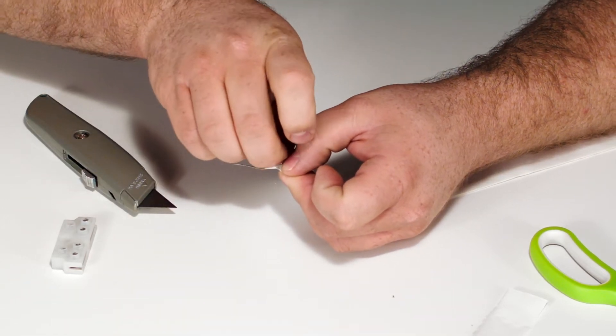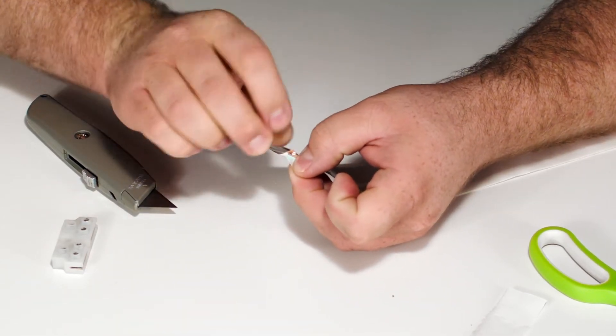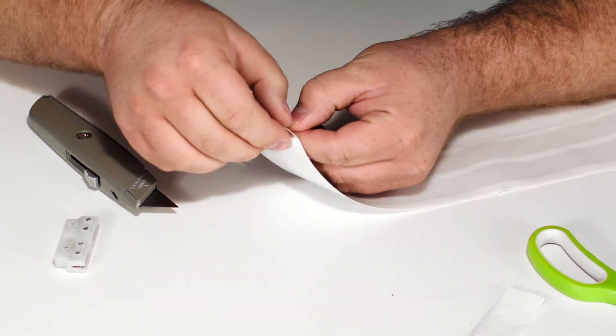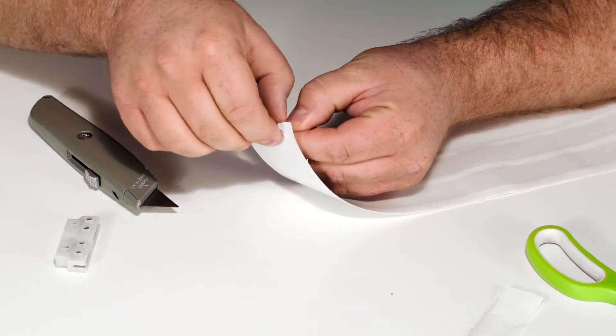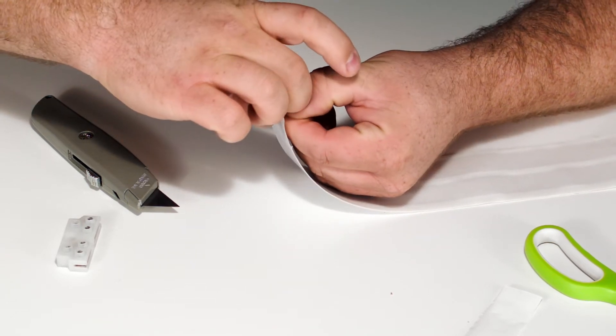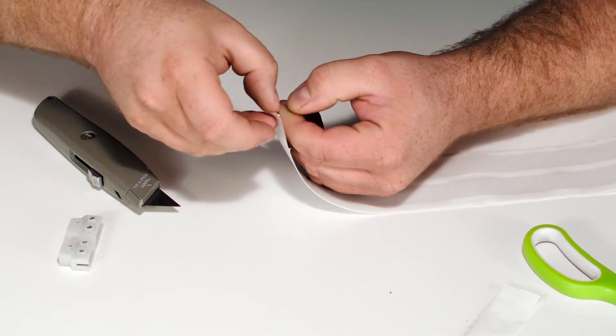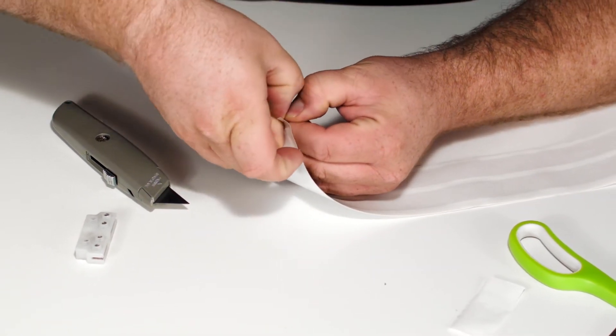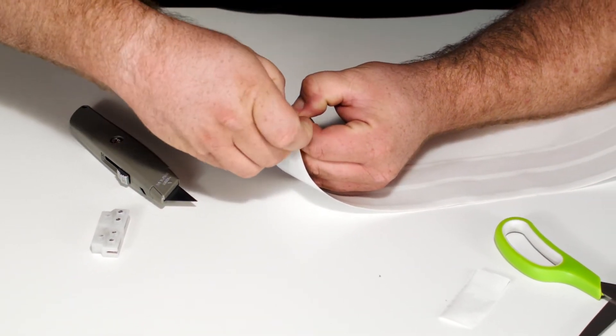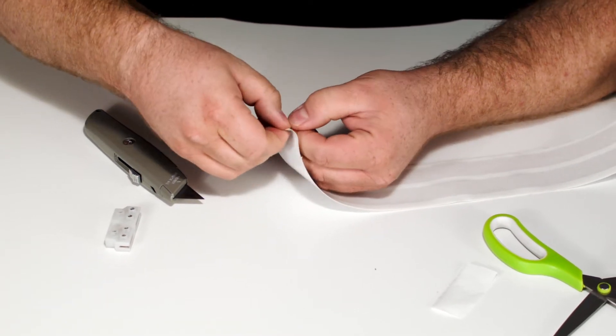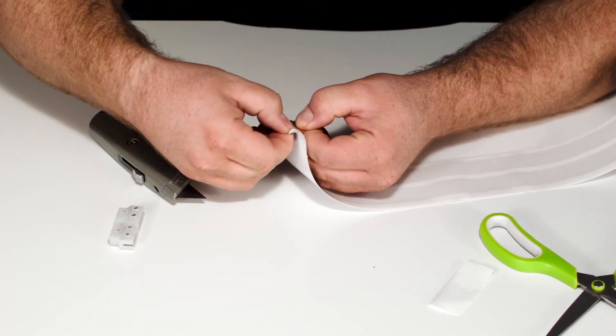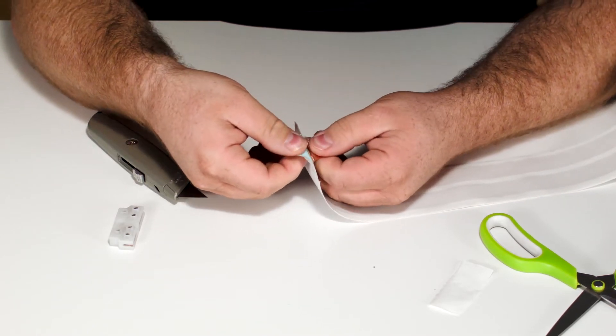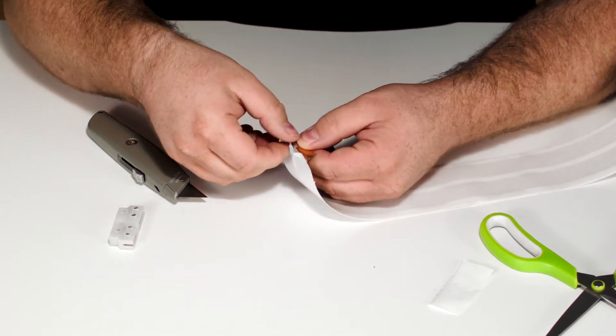As you do this, you'll notice the one side comes away pretty clean. This side that ends up being the paintable side, where the wall adhesive is, is really sticky and that just likes to stay on. So you really in most cases just have to worry about getting the top side or the paintable side clean.